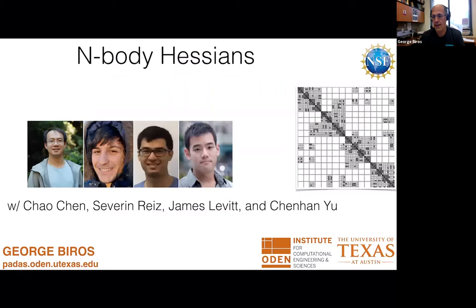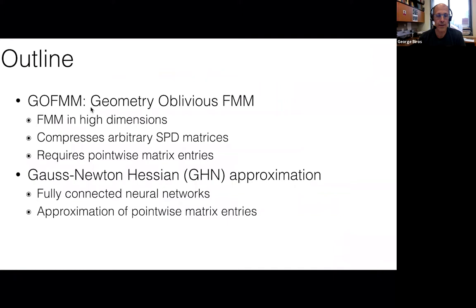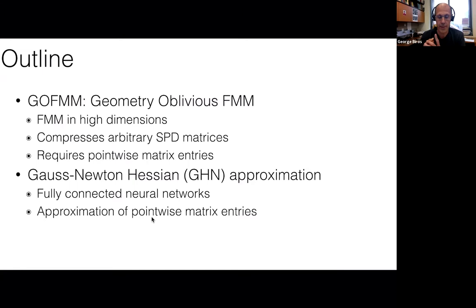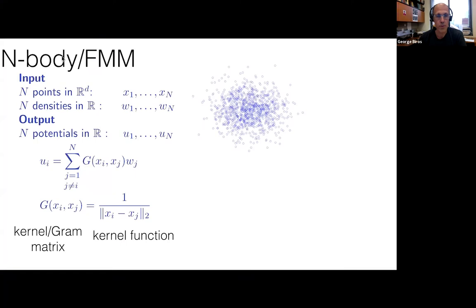That image is a hierarchical matrix, which I'm going to explain. The outline of my talk: I'm going to discuss a geometry-oblivious fast multipole method — essentially a technique to compress arbitrary symmetric positive definite matrices if they are compressible — which requires point-wise matrix entry sampling. Then I'm going to discuss its application to approximating the Gauss-Newton-Hessian of a fully connected perceptron. The challenge there is that we don't have point-wise entries efficiently, and we have to approximate them.